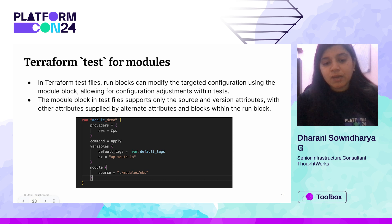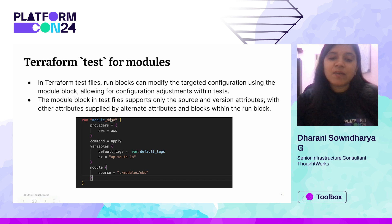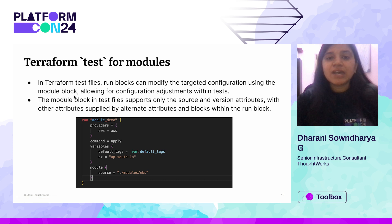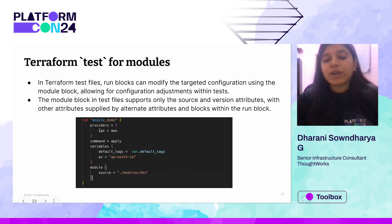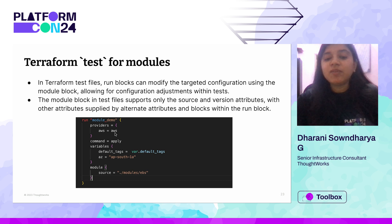You can also specify a provider block. For example, if you want to run all module-related tests in ap-south-1 and other tests in eu-central-1, you can provide use_providers and give an alias to the provider. Here, 'aws' on the left means the standard AWS provider and 'aws' on the right refers to an alias, which you will be able to see in the demo.